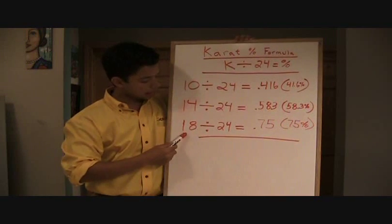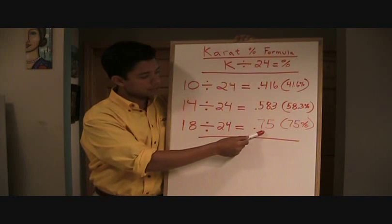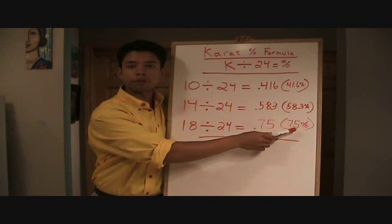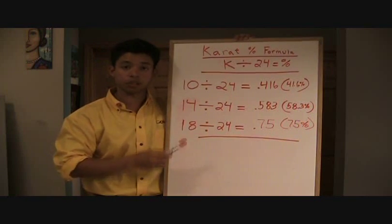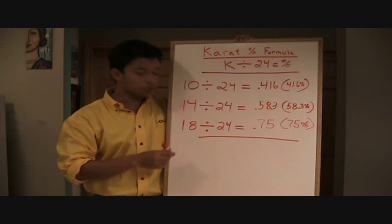18 carat, same thing, 18 divided by 24 equals .75, so it's 75 percent pure. The same formula applies with 6 carat gold jewelry, 12 carat, and 22 carat.